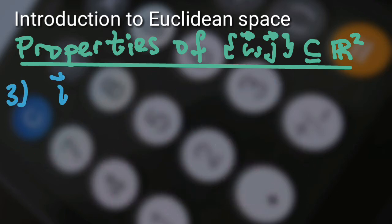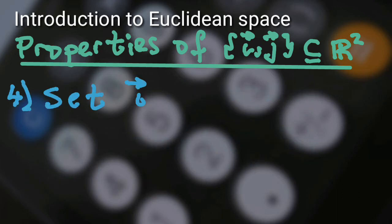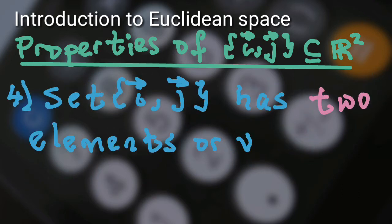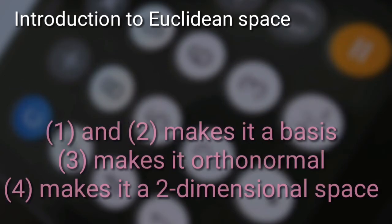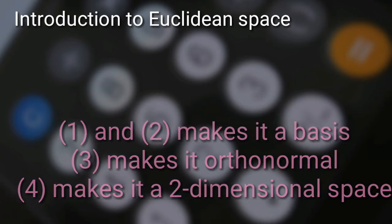Three, the vectors i and j are orthogonal and each of them has norm equal to one. Four, the set {i, j} has two vectors or elements. Property one and two makes it a basis. Property three makes it orthonormal, and property four makes it a two-dimensional space.